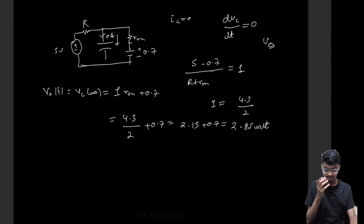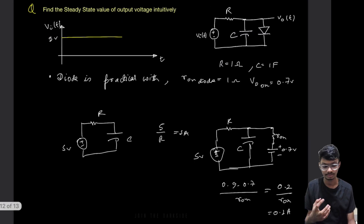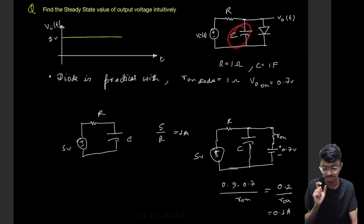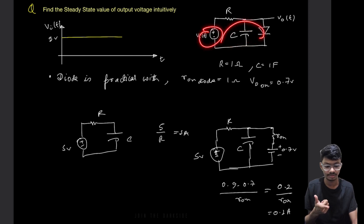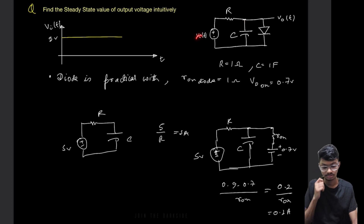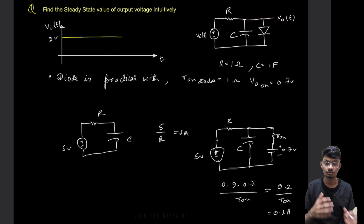To summarize the intuitive approach: initially the capacitor has zero charge so it acts as a short circuit and full current flows through it. At steady state, the capacitor becomes open circuit and all current flows through the diode branch. You simply write one KVL equation: (5 - 0.7) / (R + Ron) gives the current, and the drop across Ron plus 0.7V gives the output voltage.